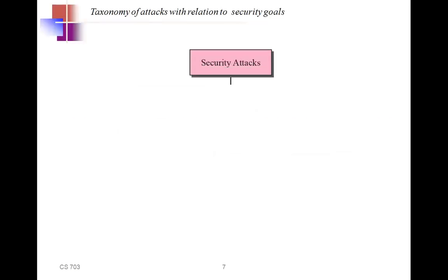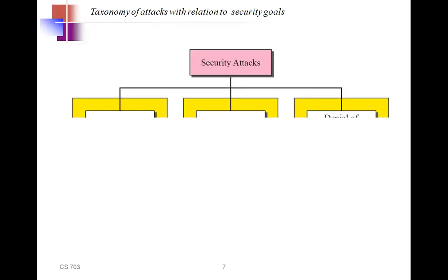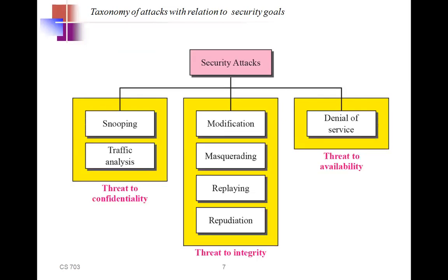Now, what are the various kinds of security goals, attacks, services, and techniques? Let's discuss the taxonomy. There are threats to availability, threats to confidentiality, and threats to integrity. Confidentiality attacks include snooping and traffic analysis. Integrity threats include modification, masquerading, replaying, and repudiation. Threats to availability include denial of service — where when you try to log in to a particular server or account, you are simply not able to do so.